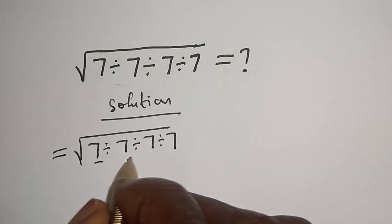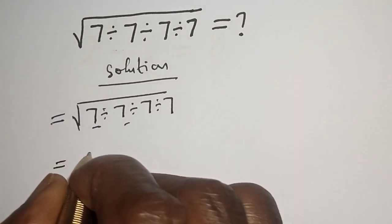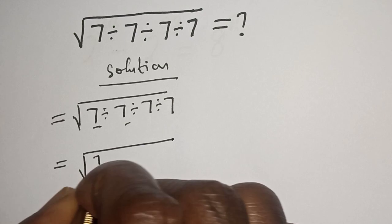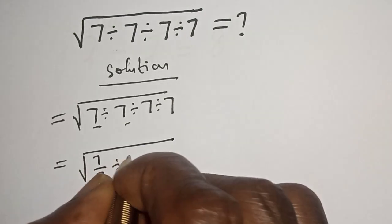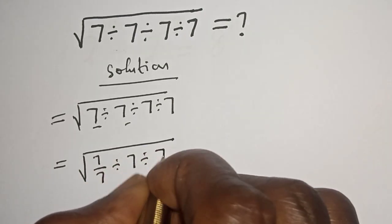Let's work with this first two. That is, square root of 7 over 7 divided by 7 divided by 7.